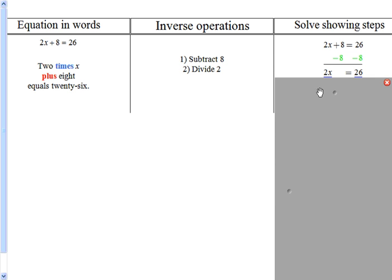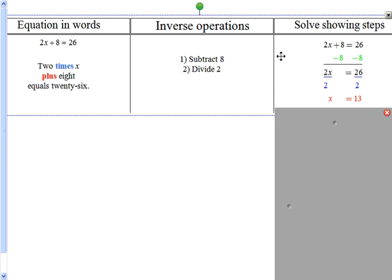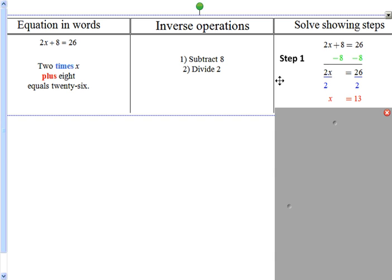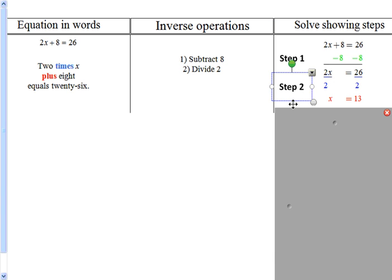Now, once we have our answers, we need to do the second step, which is to divide by 2. When we divide by 2 on each side, then we get our final answer. You can see that step 1 is when we subtract 8. And step 2 is when we divide by 2.